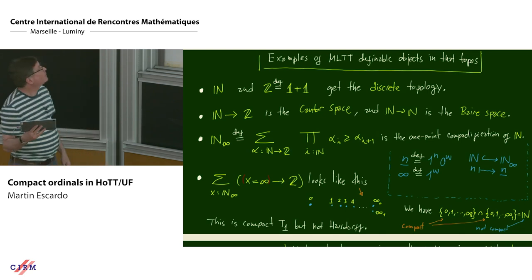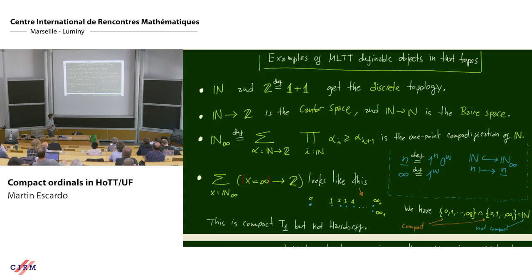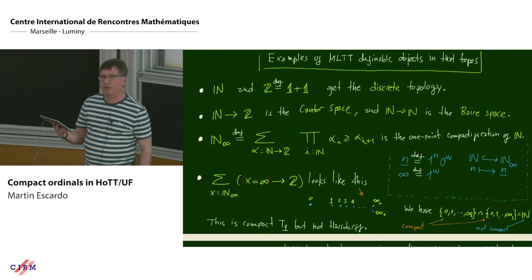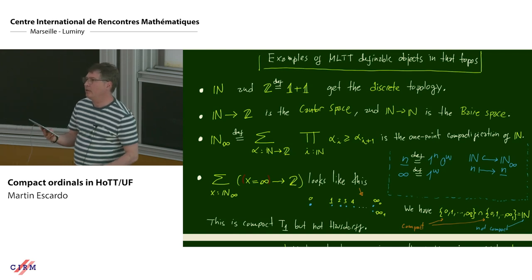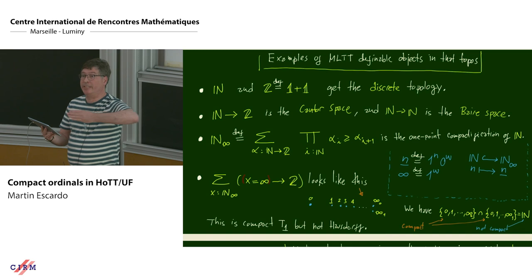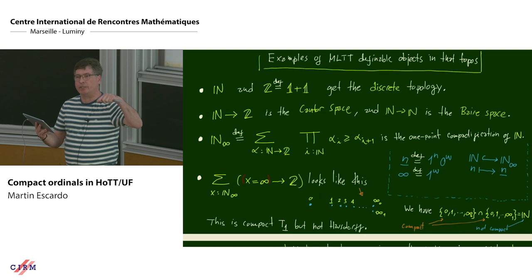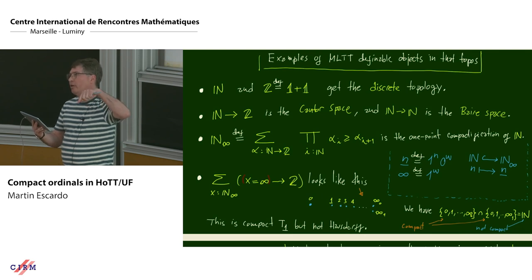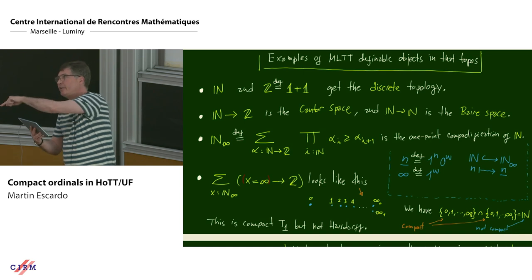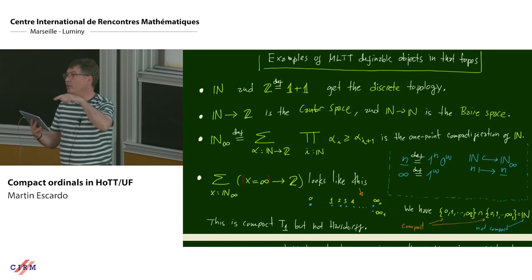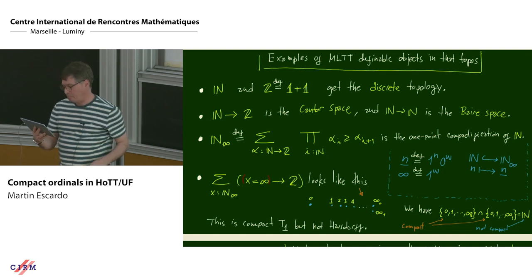I'm going to consider a variation: the compactification of the natural numbers with two points at infinity. The sequence 0,1,2,3,4,... converges to one infinity, but it also converges to the other infinity, so it is not Hausdorff — in a Hausdorff space a sequence converges to at most one point. This will be useful for some examples.